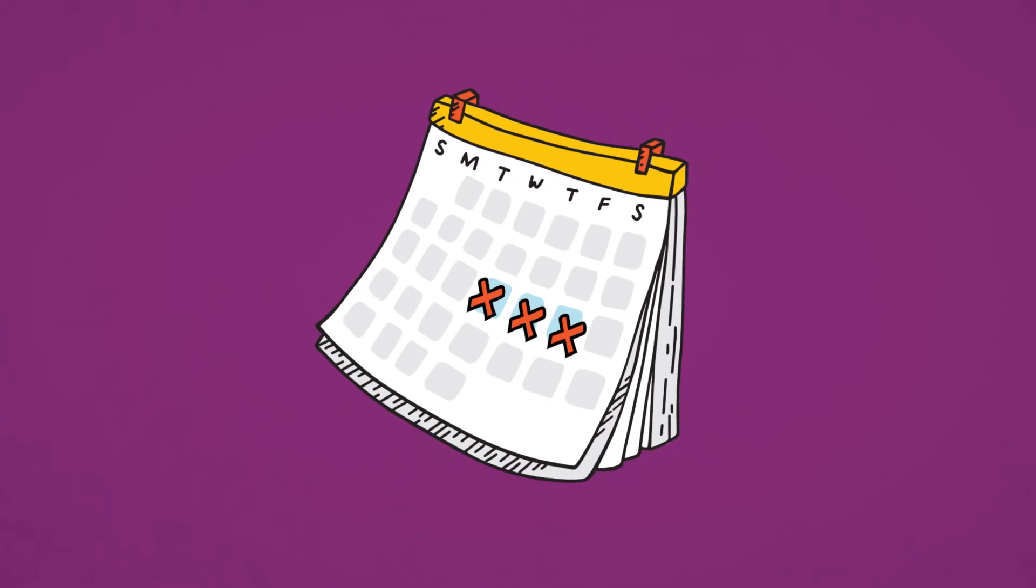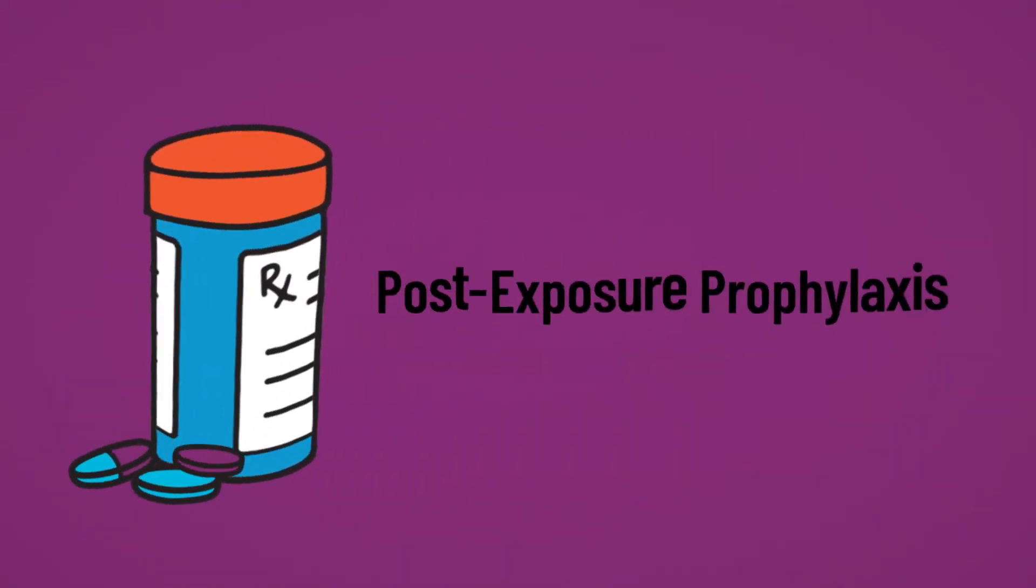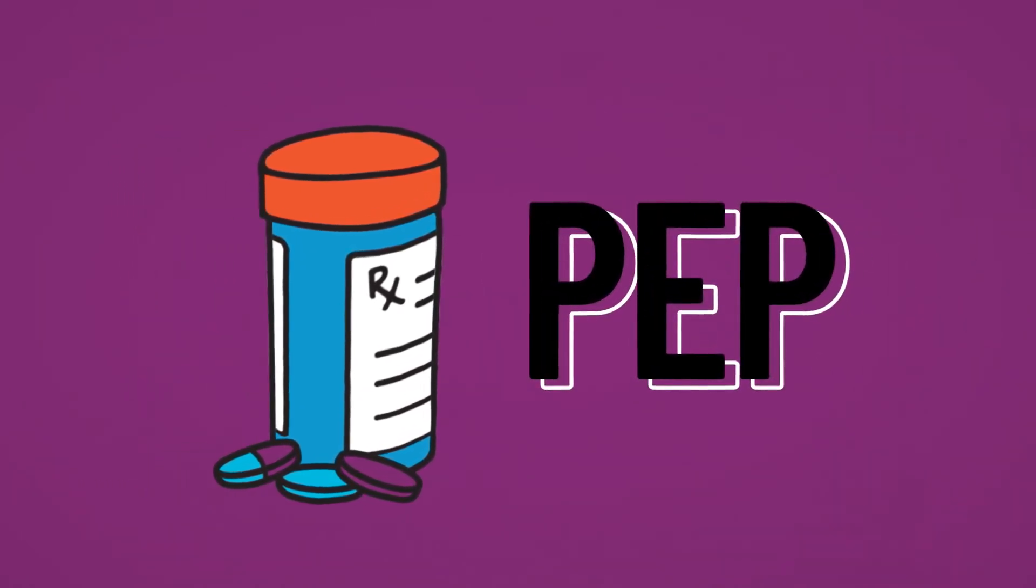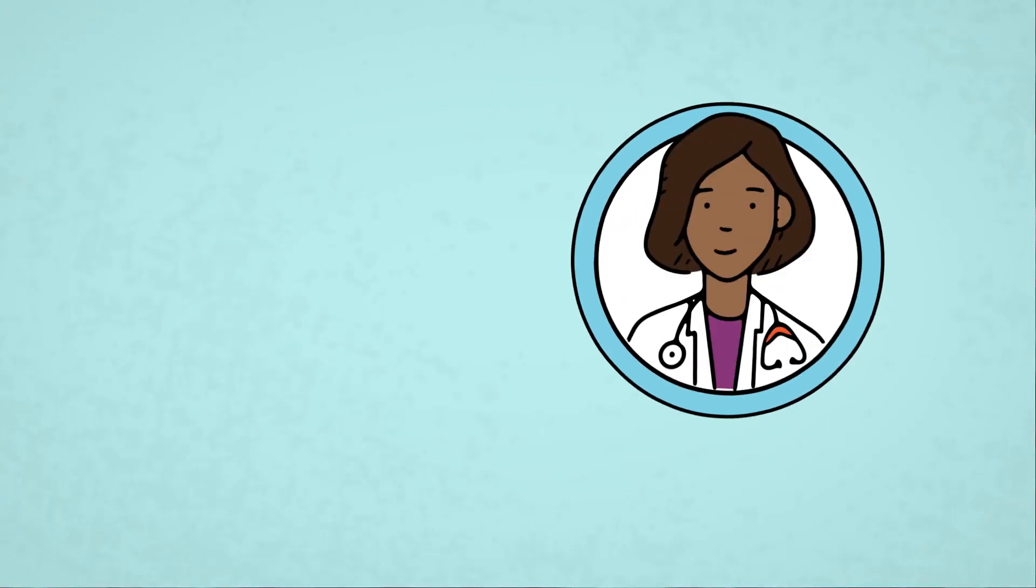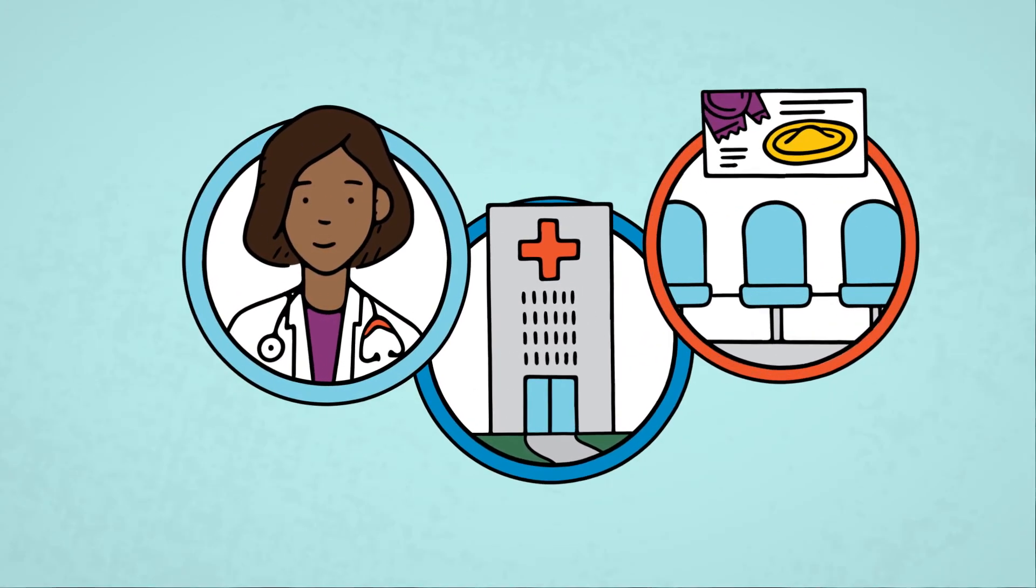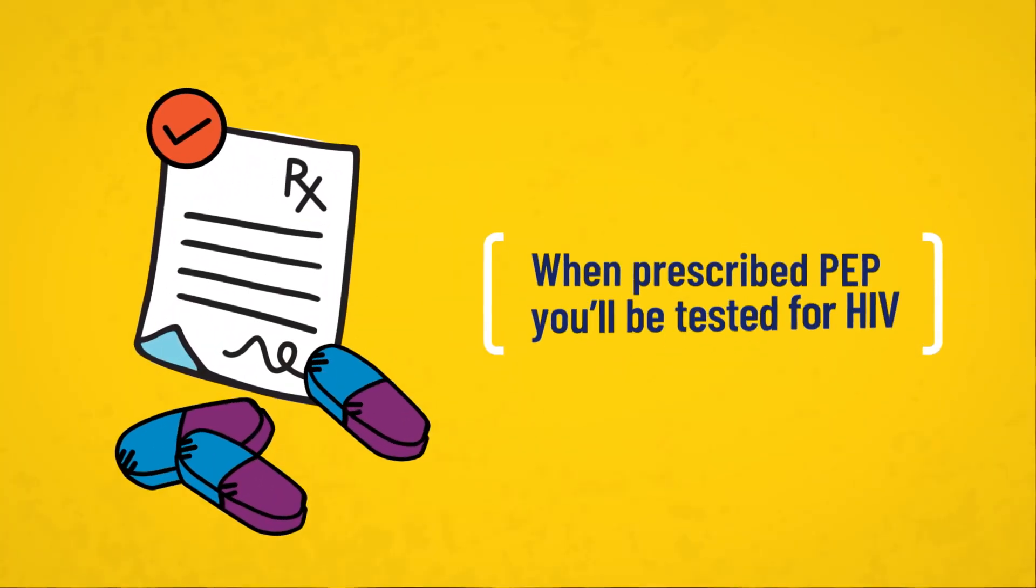Also, if you think you might have been exposed to HIV in the last three days, you can consider taking a medication called post-exposure prophylaxis, or PEP, to help prevent getting HIV. Contact your doctor, a hospital emergency room, or sexual health clinic immediately to ask about where to access PEP. When you get prescribed PEP, you will be tested for HIV.